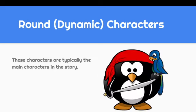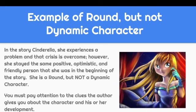These round and dynamic characters are typically the main characters in your story — your typical good guys and bad guys. They help the story plotline progress, and they are growing.